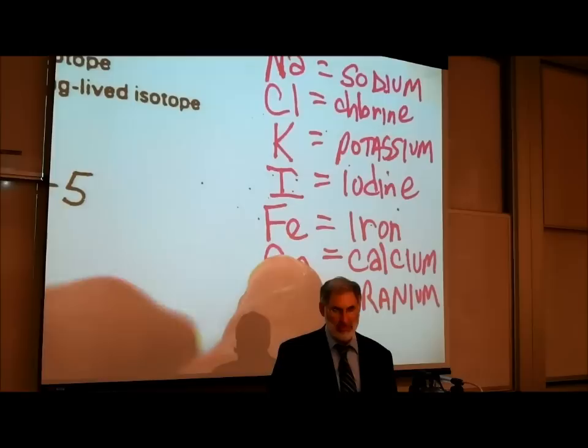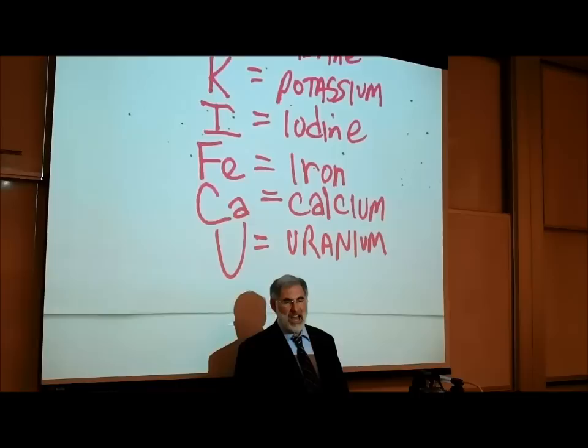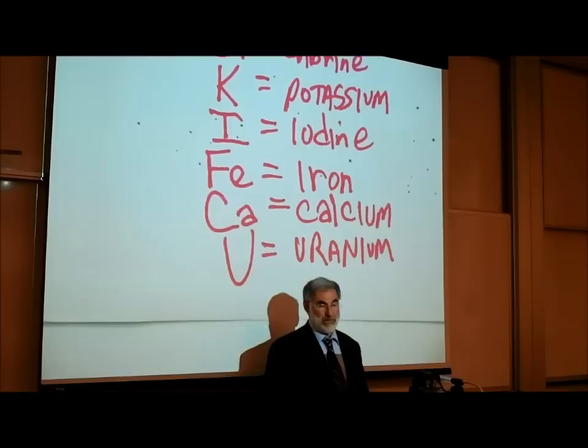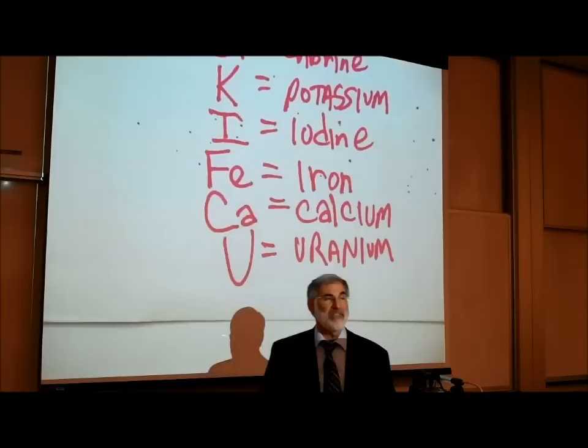Calcium is Ca. They could not use C for calcium because they'd already used C for carbon. The last one to know is U for uranium. Out of the more than 90 elements, I've given you 13 to know their abbreviations.